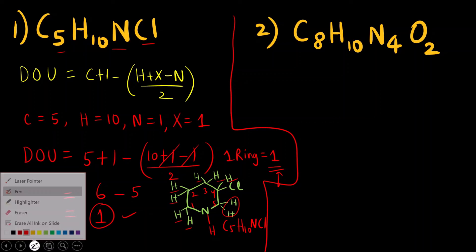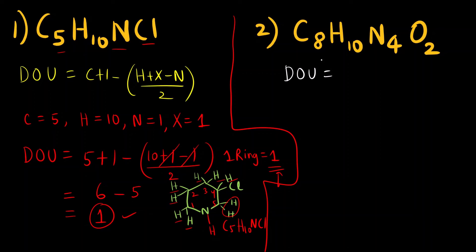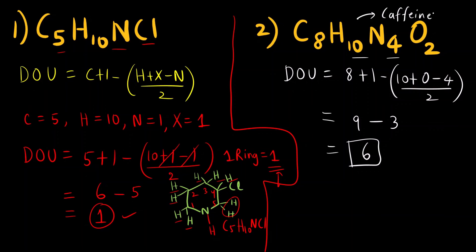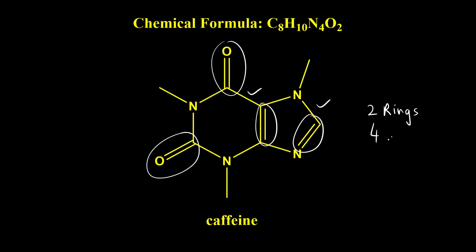For the second example, the molecular formula is for caffeine. DOU = (8+1 − (10+0−4)) / 2 = (9 − 6) / 2 = 3... wait: 9 − (10−4) = 9 − 6 = 3, divided by 2... actually: (9 − 6) = 3, no — 9 minus 6 divided by... the answer is 6. From the structure of caffeine: there are 2 rings and 4 double bonds, so 2+4 = 6. Both the formula and the structure give degree of unsaturation = 6.